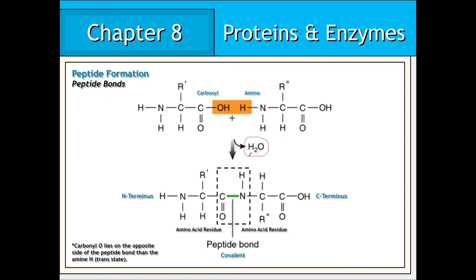The result of this interaction is the formation of a covalent peptide bond. In this particular example, the resulting molecule consisting of two amino acid residues is known as a dipeptide. All peptide molecules contain an amino group, or N-terminus, and a carboxyl group, or C-terminus, at either end of the molecule. As a result of this polarity, peptide molecules can be indefinitely elongated through the addition of new amino acids.